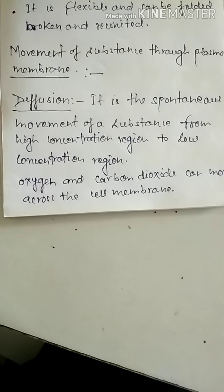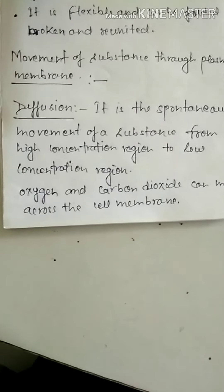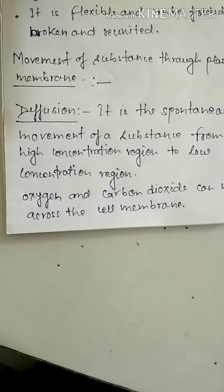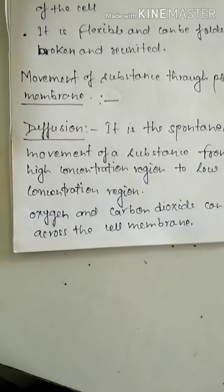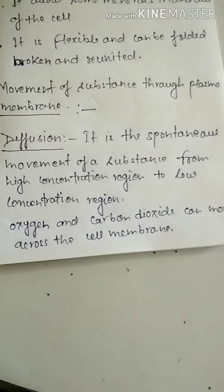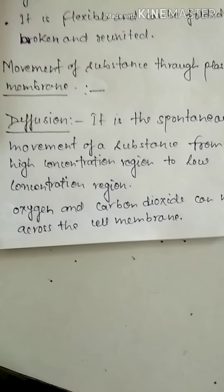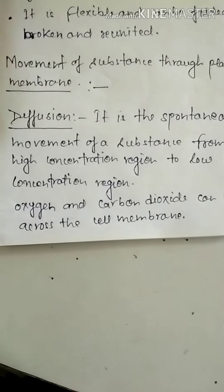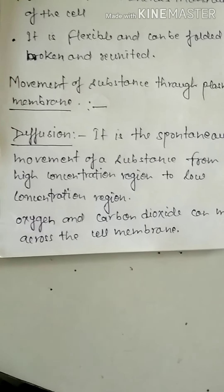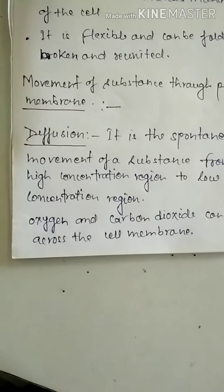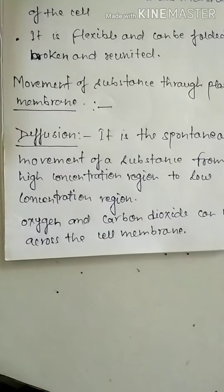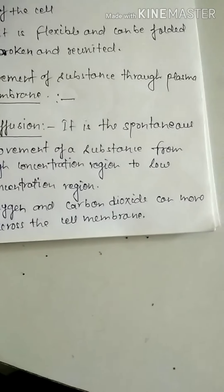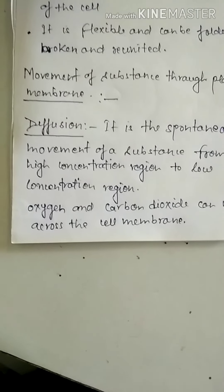We see the movement of substances through plasma membrane. There are two types of movement: first is diffusion and second is osmosis. Diffusion is the spontaneous movement of a substance from high concentration region to low concentration region. Oxygen and carbon dioxide can move across the cell membrane.